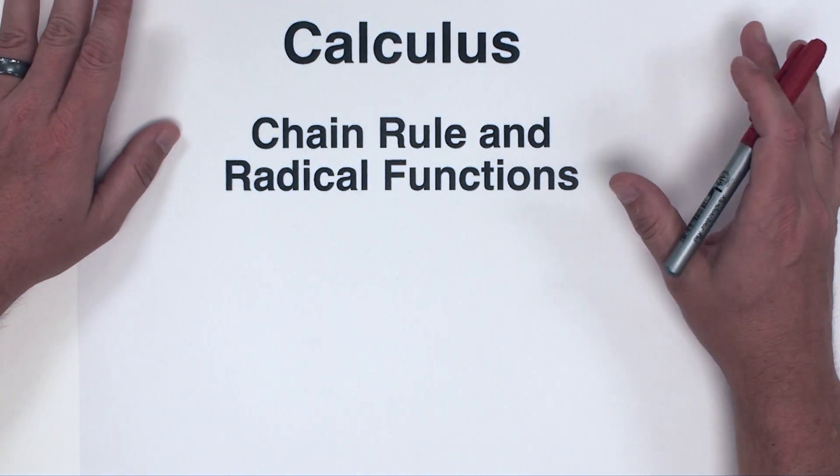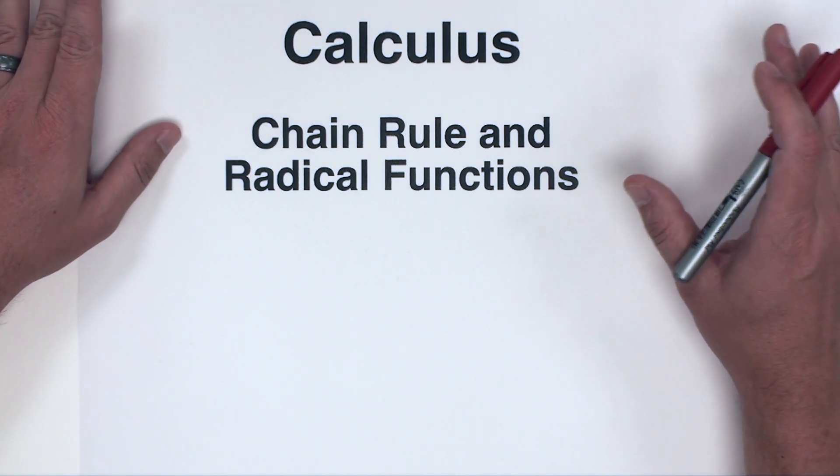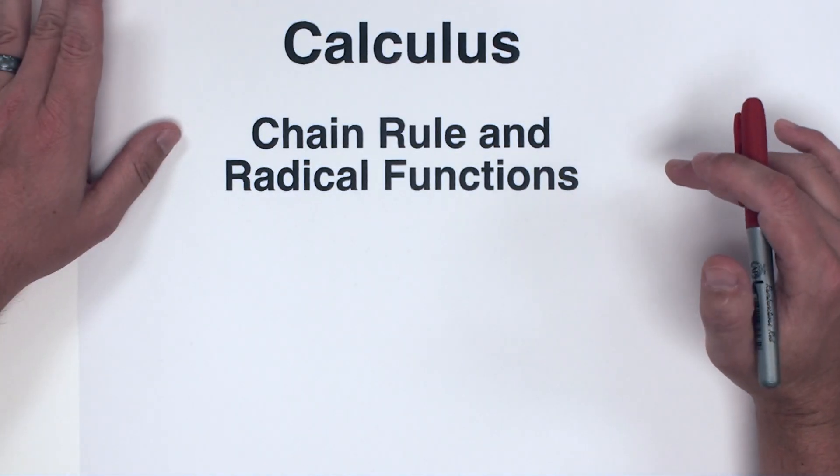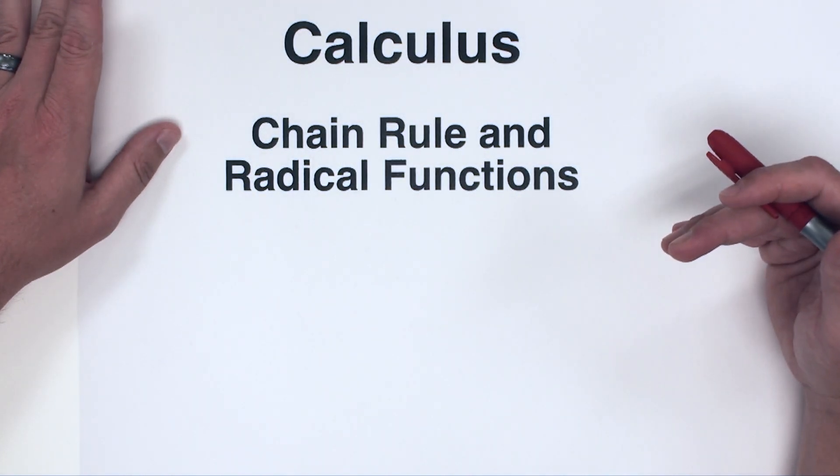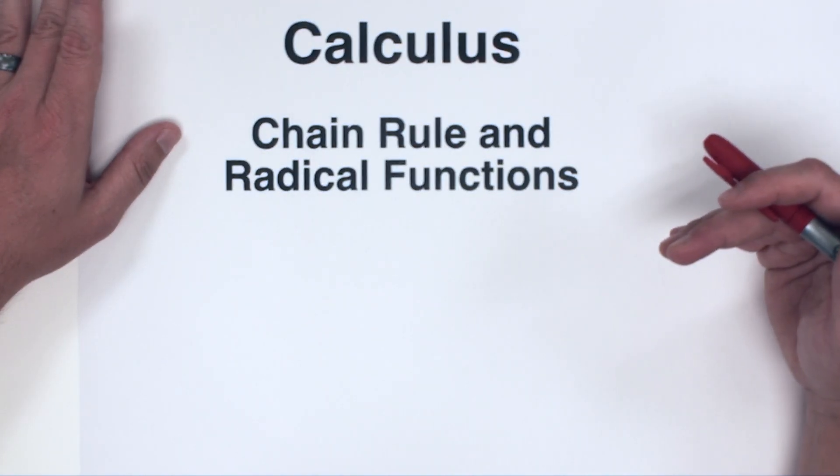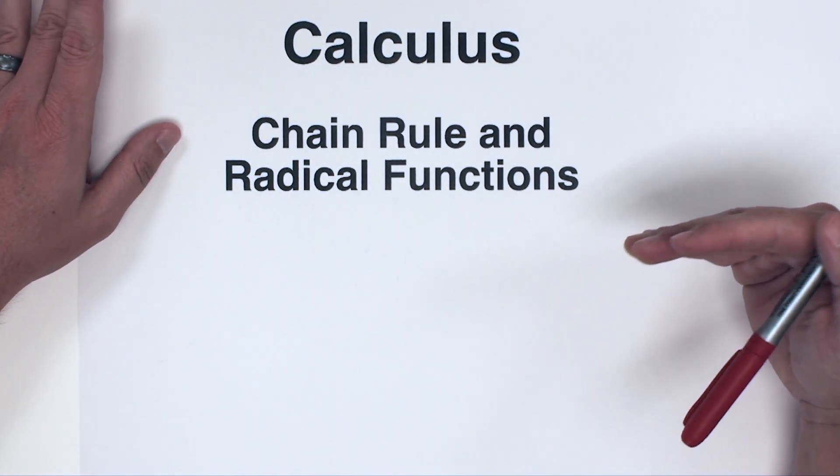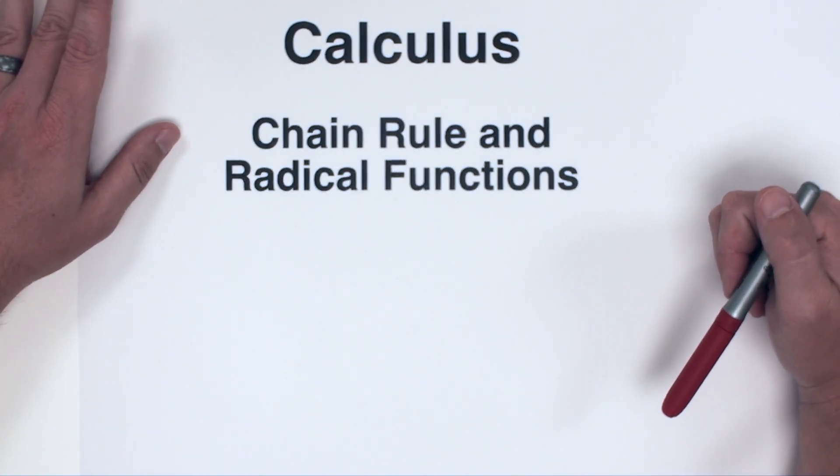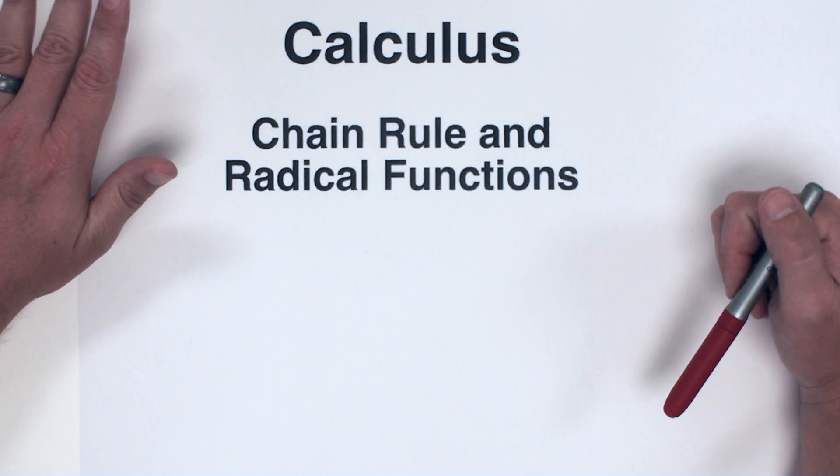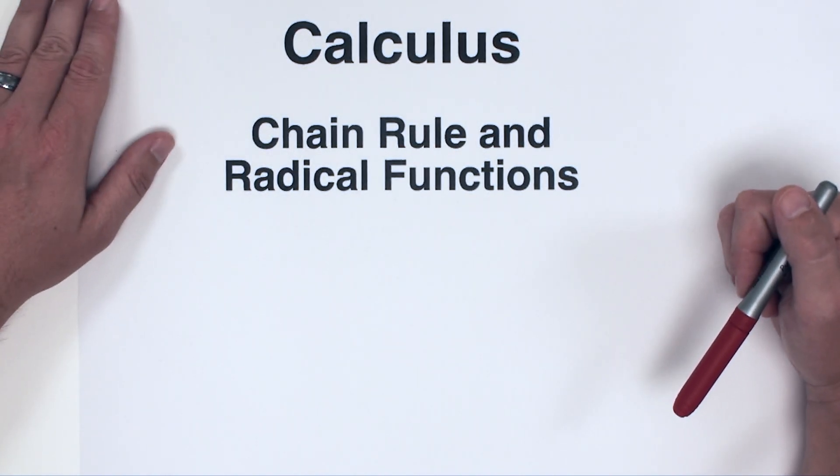Now these are essentially just going to be power chain rule problems like I showed a couple videos ago. However, the complexity of doing the powers with rational numbers coming from the radicals themselves adds a layer of complexity and difficulty to this, so I wanted to put some problems together in their own video. All right, with that let's take a look at the first example problem.